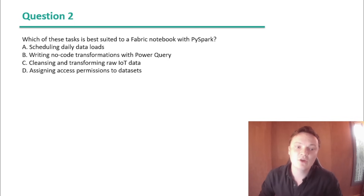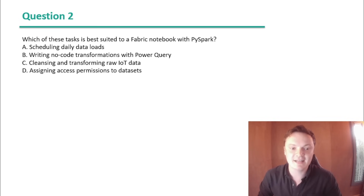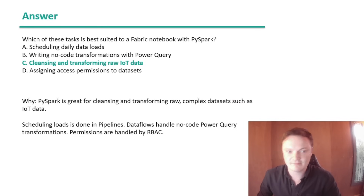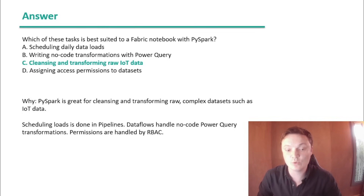Question 2: Which of these tasks is best suited to a Fabric notebook with PySpark? A. Scheduling daily data loads. B. Writing new code transformations with Power Query. C. Cleansing and transforming raw IoT data. Or D. Assigning access permissions to datasets. The answer is C. PySpark is great for cleansing and transforming raw, complex datasets such as IoT data. Scheduling loads is done in pipelines, dataflows handle low-code Power Query transformations, and permissions are handled by RBAC (role-based access control).